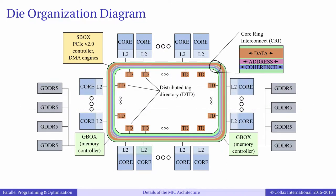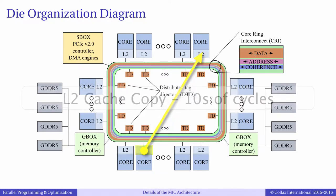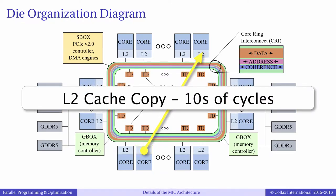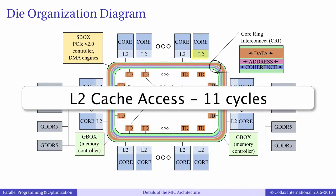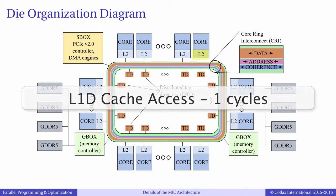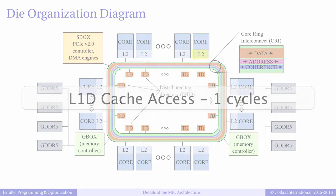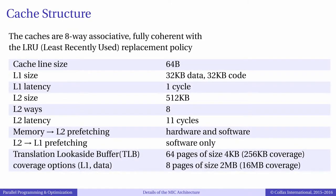The second case is if the cache line is in the cache of a neighboring core. In this case, the core will refer to the tag directory to find out the location of the cache line and then request the cache line directly from the remote L2 cache. This operation is far less costly and only takes tens of cycles. The third and fourth cases are the best cache scenarios, which are when the data is in the local Level 2 and Level 1 caches. In this case, the cache line can be obtained in about 10 cycles or one cycle from the Level 2 and Level 1 caches respectively. Therefore, data locality is the key to reducing the latency overhead of accessing memory and improving performance, especially for programs with intensive memory traffic.